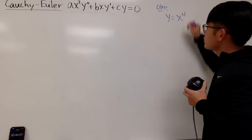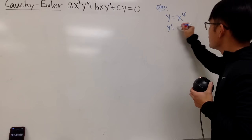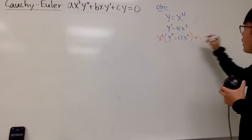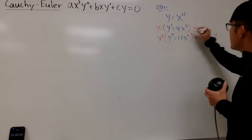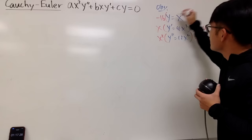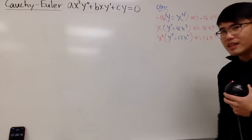Suppose you start with y = x⁴. Differentiate it: we get 4x³, and differentiate again: 12x². Now multiply 12x² by x² and you get 12x⁴. Multiply 4x³ by x and you get 4x⁴. Combining like terms gives 16x⁴. And if you multiply x⁴ by negative 16, you get −16x⁴.